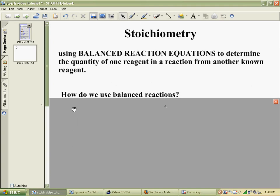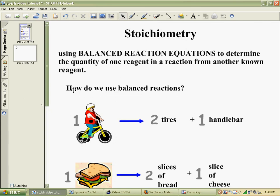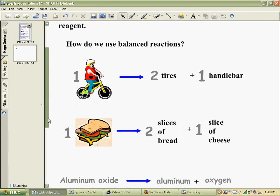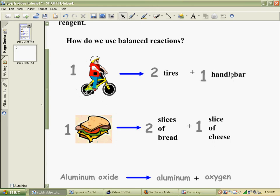So we'll just get rid of our screen shade. Why are we using a balanced reaction equation? Well, in a simple way, if you were to take one bicycle apart, one bike, you could break that up, a decomposition reaction in a pretty simple way, into two tires and one handlebar. And it's balanced, you see, one bike, two tires, one handlebar.